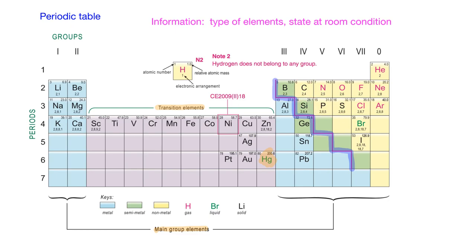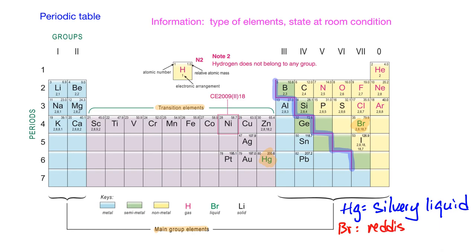Not all non-metals are gas — some are still solid. Pay attention to bromine as well: bromine is also in liquid state. So in the periodic table, there are two elements in liquid state at room condition — mercury and bromine. Mercury is a silvery liquid at room condition, while bromine is a reddish-brown liquid. If someone tells you the color of a liquid element, you should be able to identify whether it's mercury or bromine.